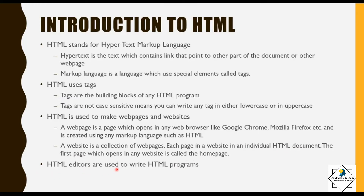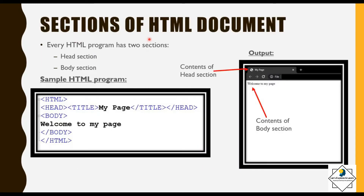HTML editors are used to write HTML programs. Every HTML program has two sections: head section and body section. Here I have one sample HTML program in which the title of the page is 'My Page' and in the body I have written 'Welcome to My Page'. In the head section we have the head tag and the title tag. You can see in the output the title of the page is displayed in the title bar, whereas the body section content is displayed in the main part of your web browser.